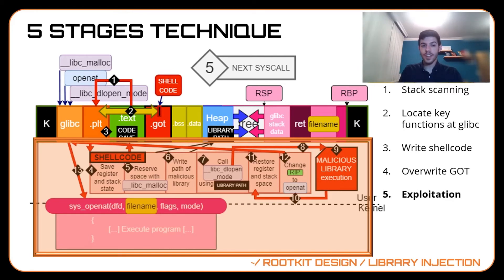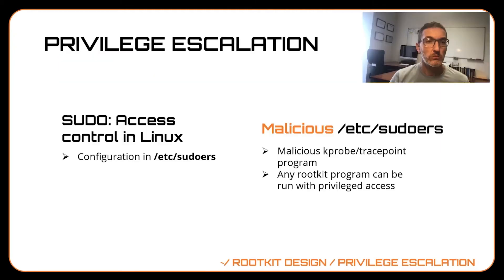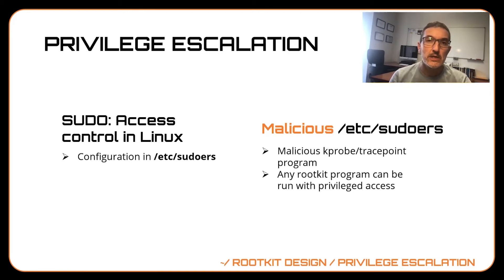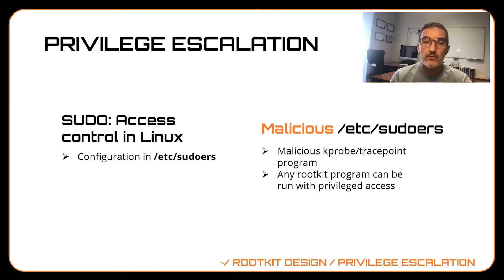Now Dr. Tapidor will join us to cover the rest of the rootkit modules. Let's describe the privilege escalation module. Our goal here is to enable the rootkit to execute any arbitrary code with full privilege. eBPF doesn't allow us to tamper with the proc filesystem as a kernel module can, but we can instead modify the data that the kernel reads from the proc filesystem. We inject a malicious trace point program that modifies the data read from the proc file so that programs the rootkit wants are always able to run as root.